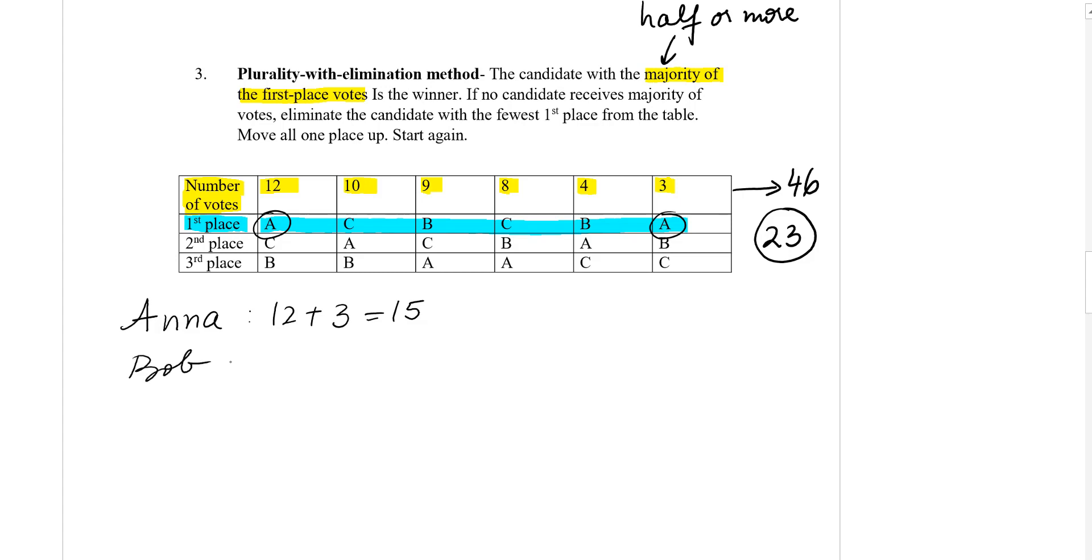Bob is here and here, so Bob has 9 plus 4, which is 13 votes. And Charlie is here and here, so it has 10 plus 8 votes, 18.